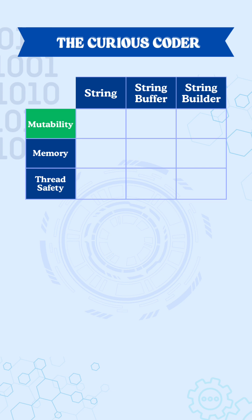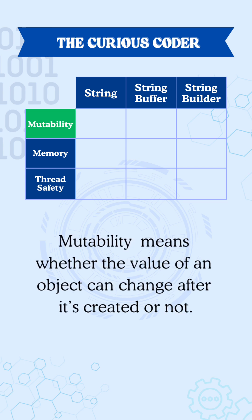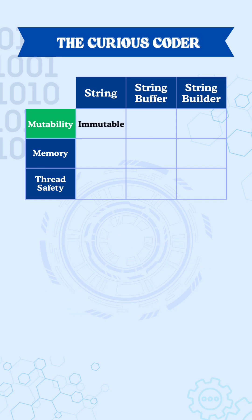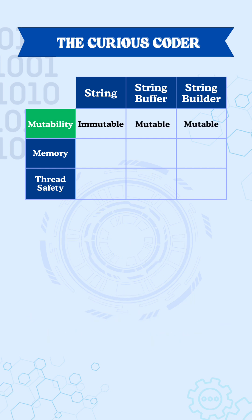Let's start with mutability. Mutability simply means once an object is created, can its value change or not. A String is immutable — that is, once created it can't be changed. So if you try to modify a String, Java doesn't change the existing one; instead it creates a new String object in memory. But StringBuffer and StringBuilder are mutable, which means when you modify them, they change the original one itself.